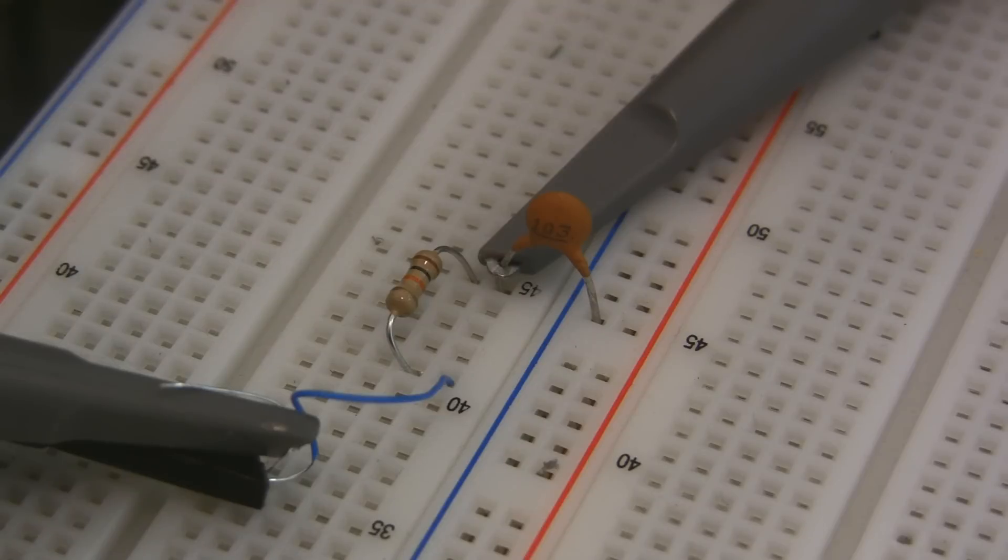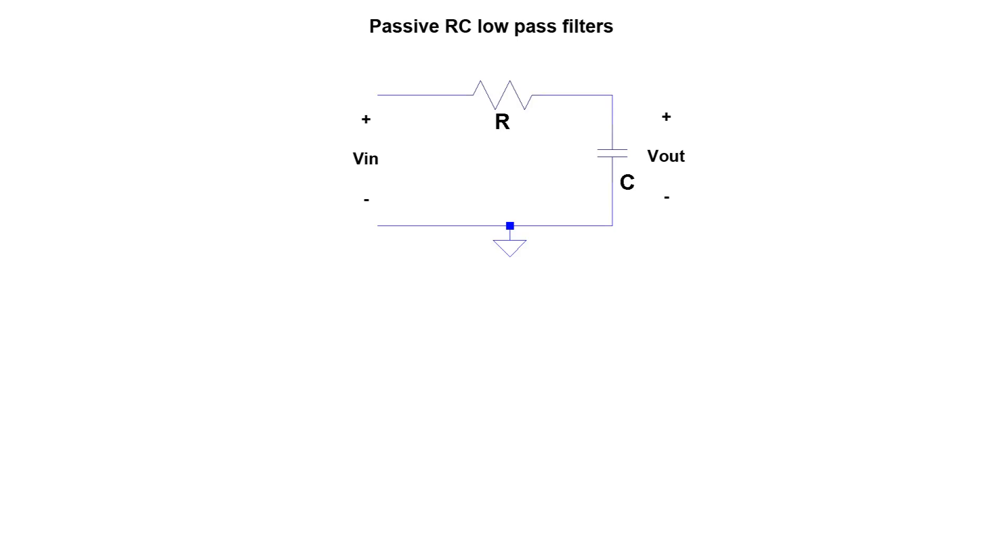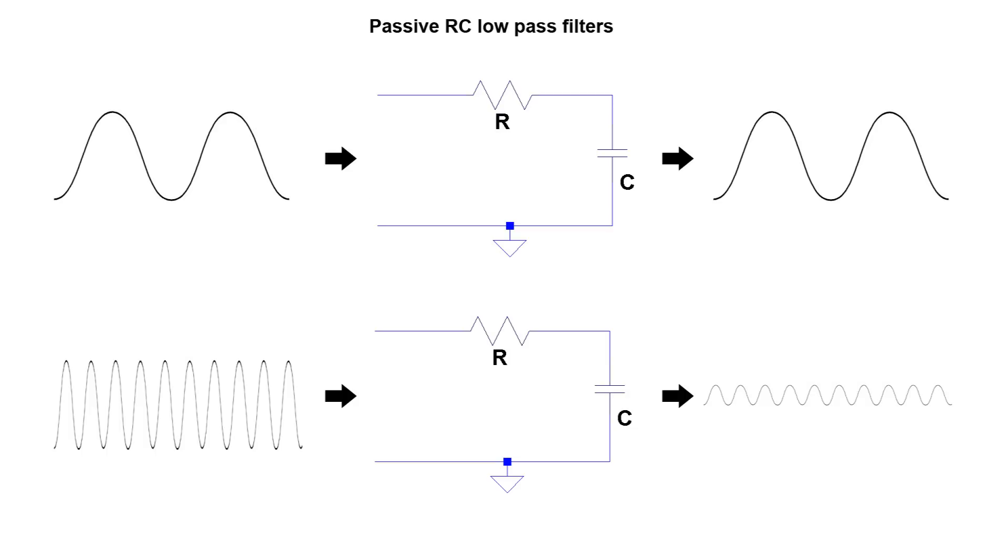Let's start with RC low-pass filters because they're easy. An RC filter is just a filter made out of a resistor and a capacitor. The original signal goes in and the filtered signal comes out.